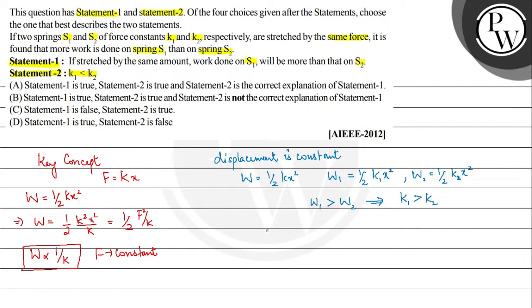But in the first statement, the first statement was given, it says that work done on spring S1 will be greater than the work done on spring S2. But when we kept the force constant, so when we have kept the force constant, then we have this condition arise.